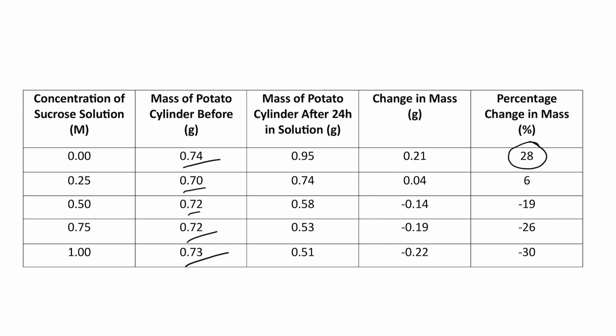So to do this, we divide the change in mass by the starting mass and then we multiply this by 100. So for example, the first one would be 28%.